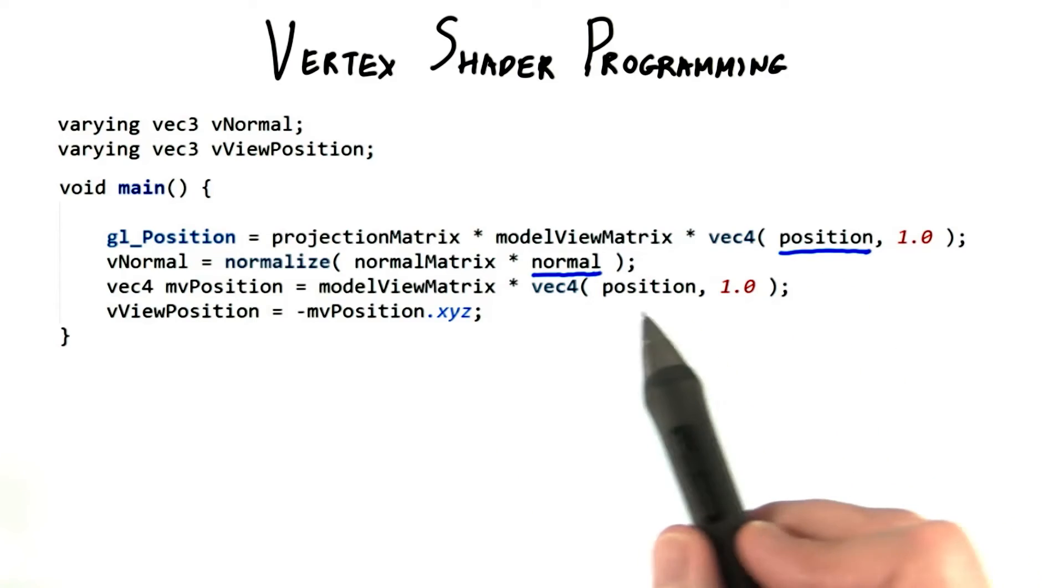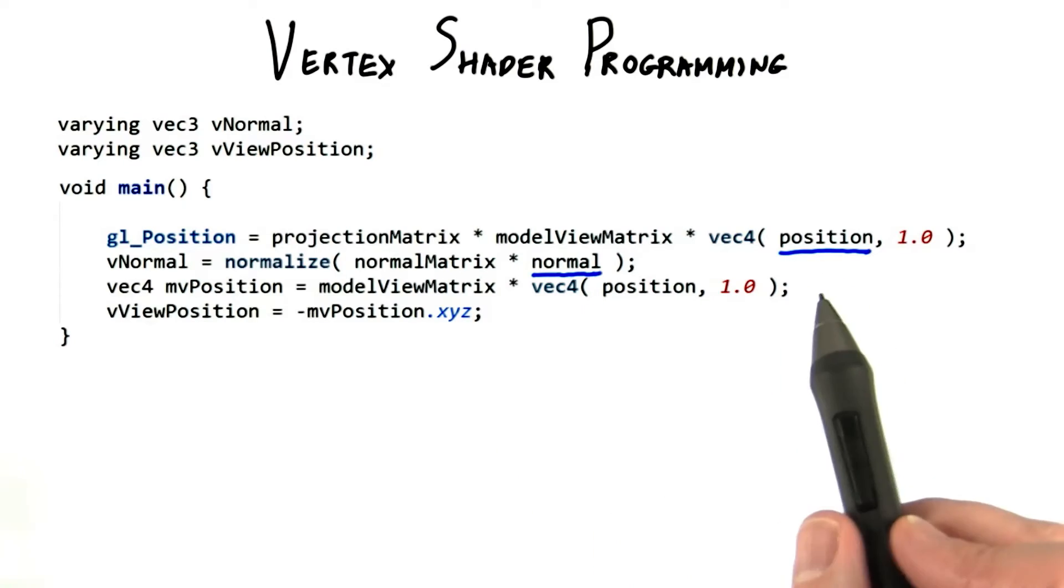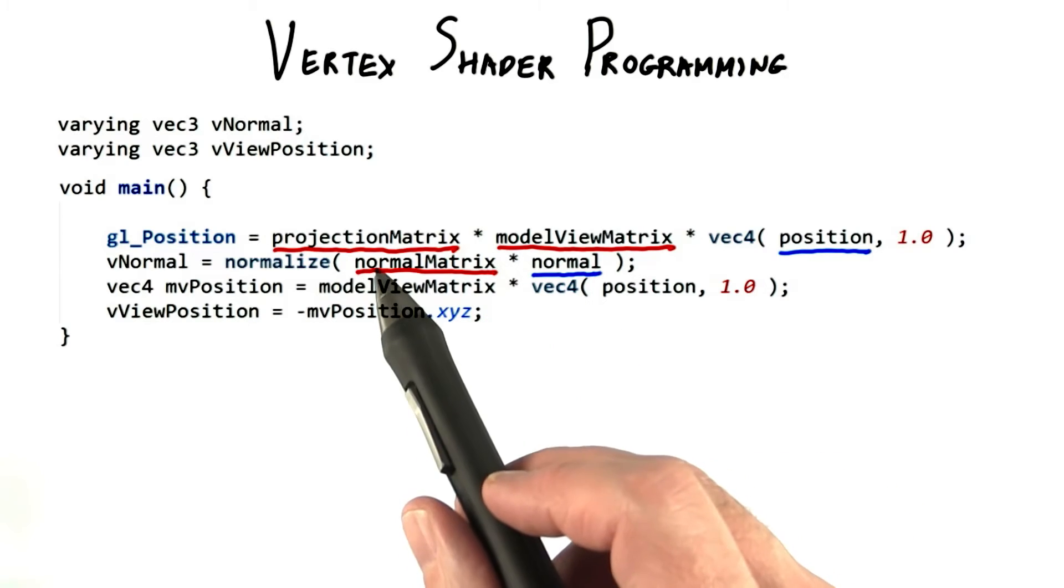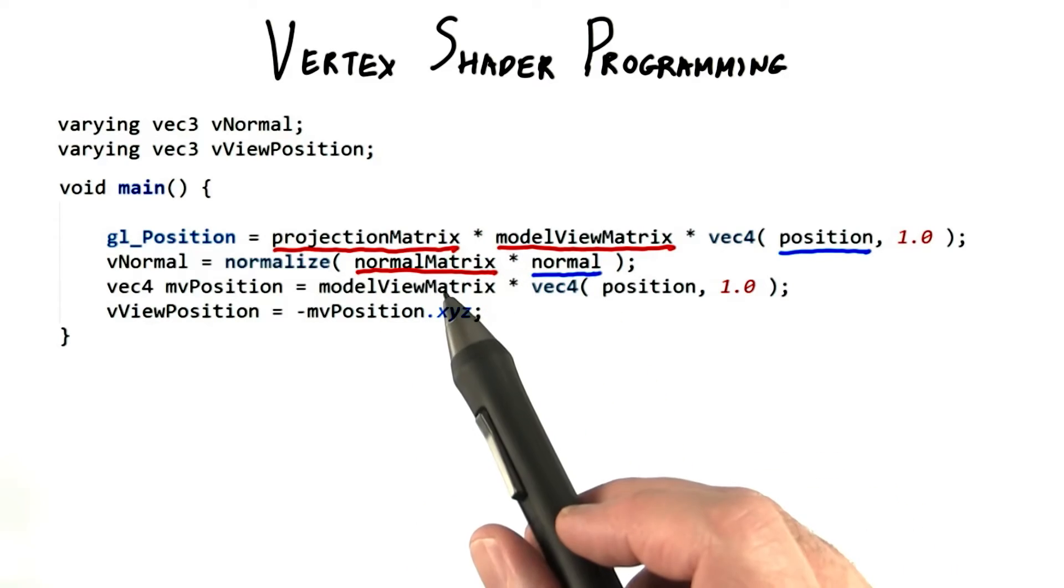The position and normal of the vertex are passed in with these names: position and normal. A few built-in matrices are used for transformation, namely projection matrix, model view matrix, and normal matrix.